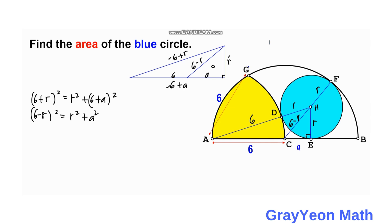So next we simplify this. Let's call this equation 1 and this equation 2. Let's simplify equation 1. We have here 6 squared, or 36, plus 12R plus R squared is equal to R squared plus 36